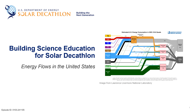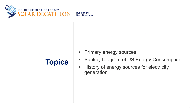Welcome to the Solar Decathlon Building Science Education Series. My name is Paul Torsolini, and in this episode we will be discussing the flow of various energy sources in the United States, from raw resources to their final point of consumption. We will cover primary energy sources at a high level, then look at a Sankey Diagram to see where and how different energy sources are consumed. Finally, we'll talk about the generation of electricity and what energy sources have been used over the past 20 years.